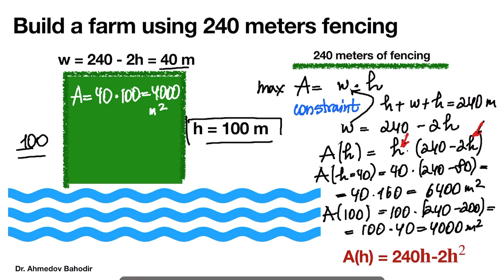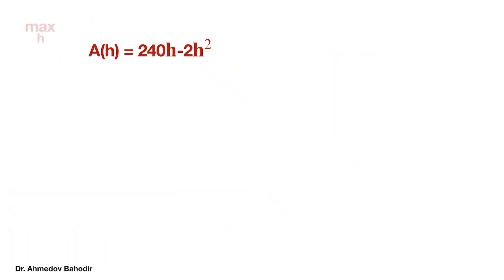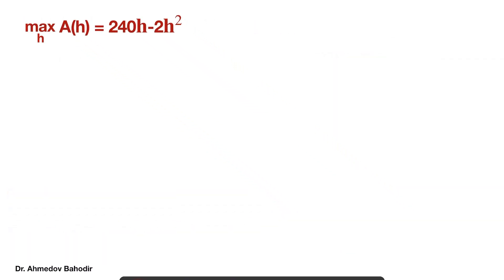We have the function A which depends on h, and what we need to do is maximize this function. We are going to use differentiation to find the maximum value. We need to take the derivative of this function with respect to h, and the derivative is going to be 240 minus 4h.